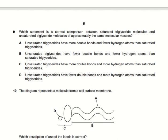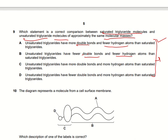Which statement is the correct comparison between a saturated triglyceride and an unsaturated triglyceride of approximately the same molecular mass? Unsaturated triglycerides have more double bonds and fewer hydrogen atoms than saturated triglycerides. The more unsaturated a triglyceride is, the more double bonds it has, and fewer hydrogen atoms are present. All other options are incorrect, so option A is the right answer.